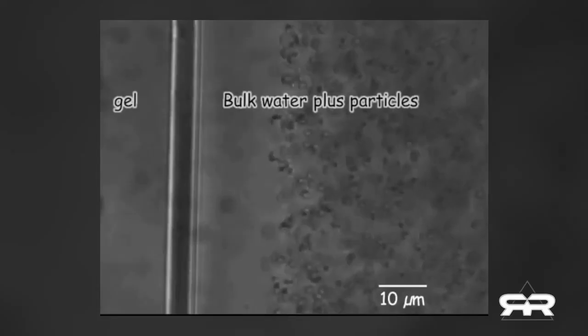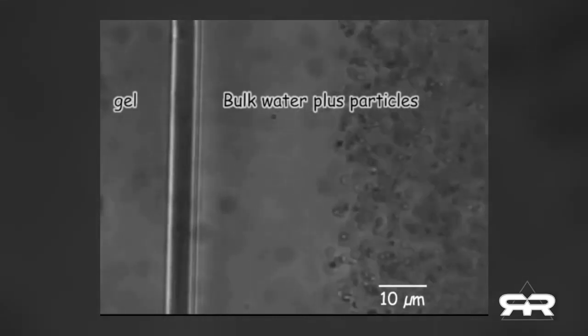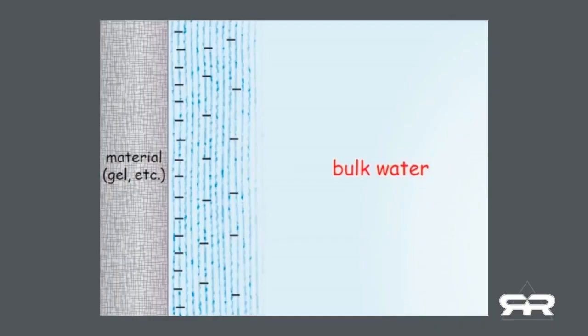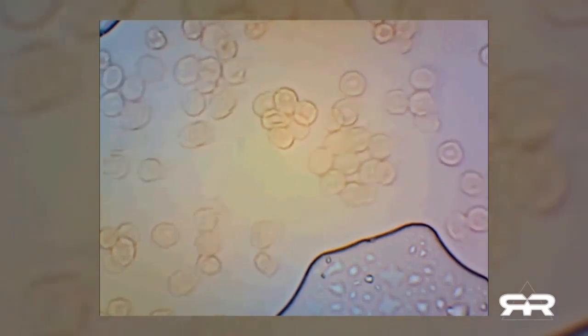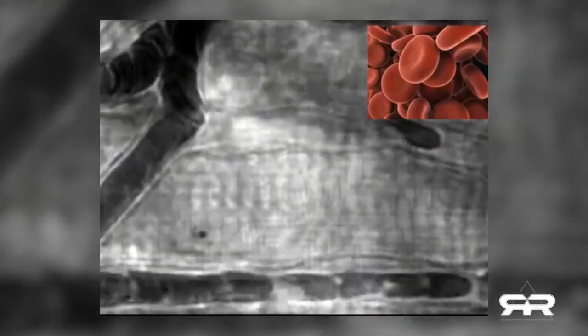This fourth state is an electropolar state, whereas some of the water becomes a negatively charged gel, and the rest, known as bulk water, maintains a positive charge and remains more like a liquid. This electropropulsion creates movement and kinetic energy. This is how the blood is moved throughout our body. The latest evidence shows that the blood is pumping the heart, not the other way around. And it's the gel state water that propels the blood.